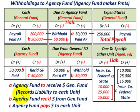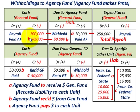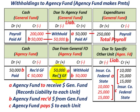Now the agency fund actually receives the dollars from the general fund. In the general fund, 'due to the agency fund' is debited out — removing that $50,000 liability — and cash is credited $50,000 paid to the agency fund. In the agency fund, cash is debited for $50,000 received, and 'due from the general fund' is credited $50,000 to remove that receivable, since the general fund has now paid.